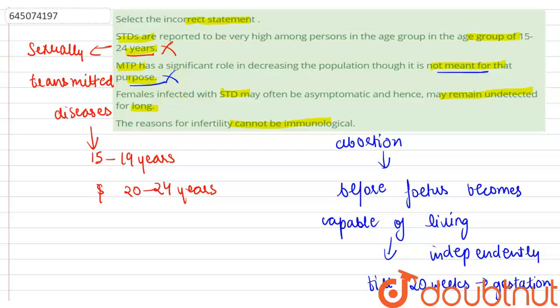The third statement — that females infected with STDs may often be asymptomatic and hence may remain undetected for long — is also a correct statement, so this option is incorrect.